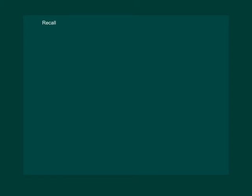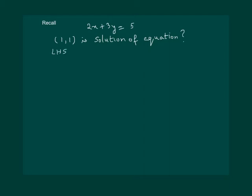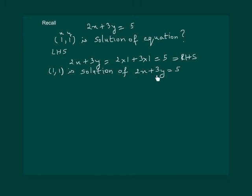Let us recall another fact about the solution of a linear equation in two variables. Suppose we have 2x plus 3y equal to 5. Then (1, 1) is a solution of this equation if it satisfies the equation — that means if we substitute the values corresponding to x and y in the left hand side and we get the right hand side, then it is a solution. Substituting x equal to 1 and y equal to 1, we get 2 plus 3 equal to 5, which equals the right hand side. So we can say that (1, 1) is a solution of 2x plus 3y equal to 5.